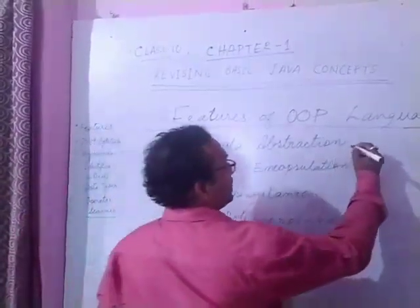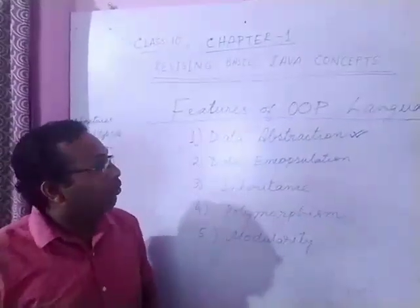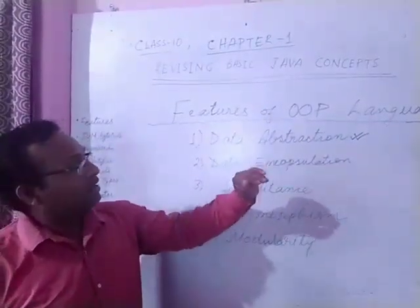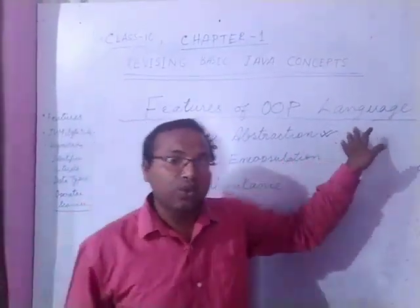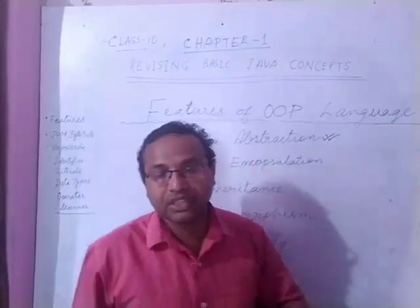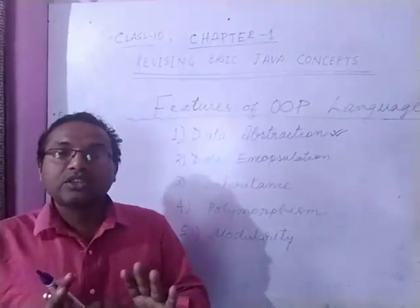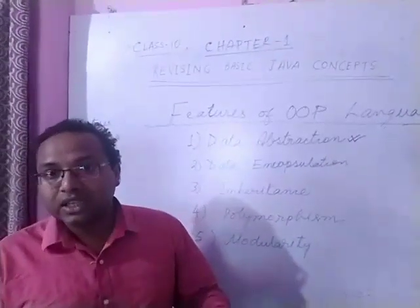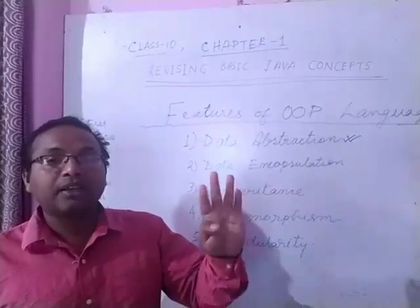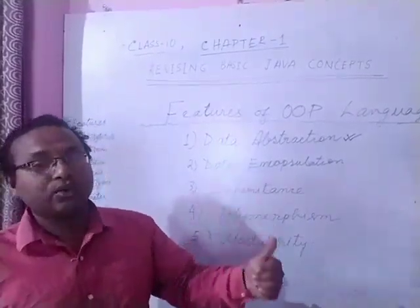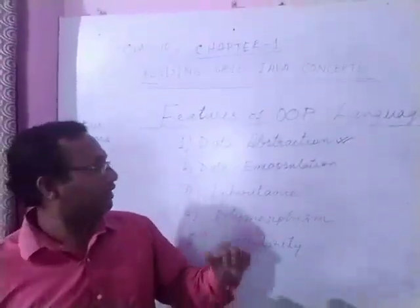Now I am going to define each feature one by one with an example. Data Abstraction is the act of representing the essential features without including the background details. For example, if you are planning to buy a car, we are interested only in the external features like the look, price, brand, mileage, and other features, without including the internal mechanism or the working of it.